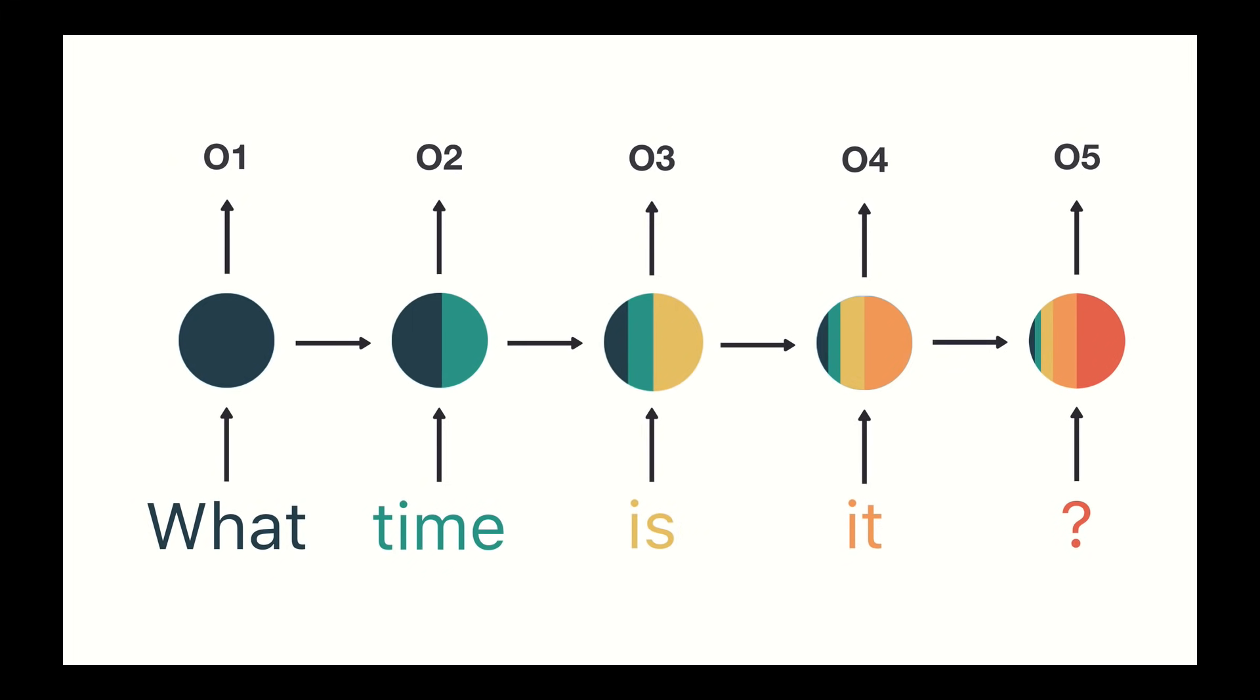So as the RNN processes more steps, it has trouble retaining information from previous steps. As you can see, the information from the words 'what' and 'time' is almost non-existent at the final step.